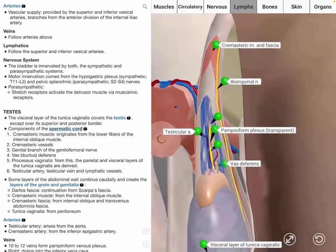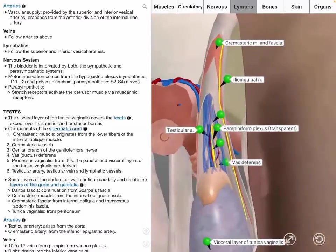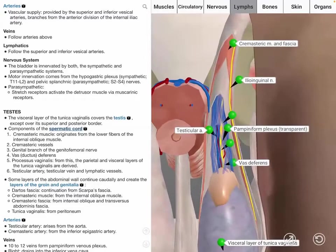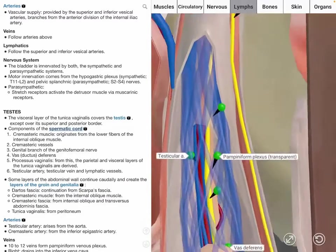The vas deferens, which transports sperm from the epididymis to the urethra, the testicular artery and vein, and lymphatic vessels, as well as the remnant of the processus vaginalis, which forms the parietal and visceral layers of the tunica vaginalis.